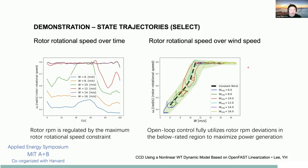An interesting state trajectory is rotor rotational speed. Rotor RPM is regulated by the maximum rotor rotational speed constraint. The plot of rotor speed over wind speed shows that open-loop optimal control fully utilizes RPM deviations — especially in the below-rated regime — to maximize power generation, going slightly above or below the constant wind speed case depending on the wind profile.